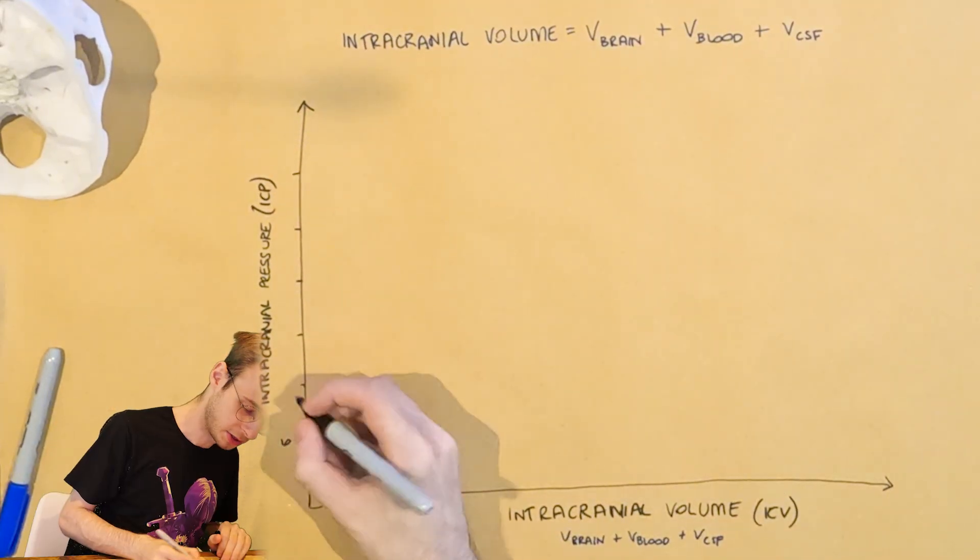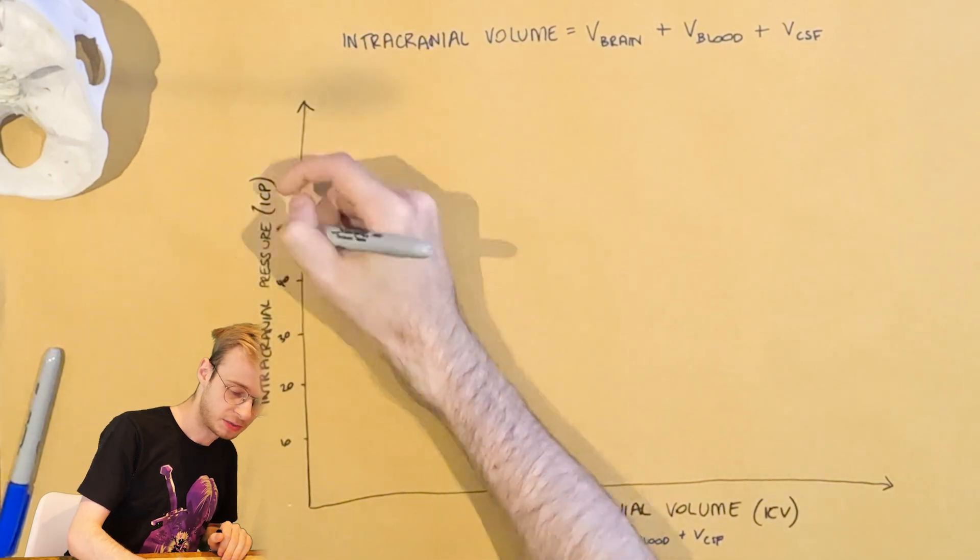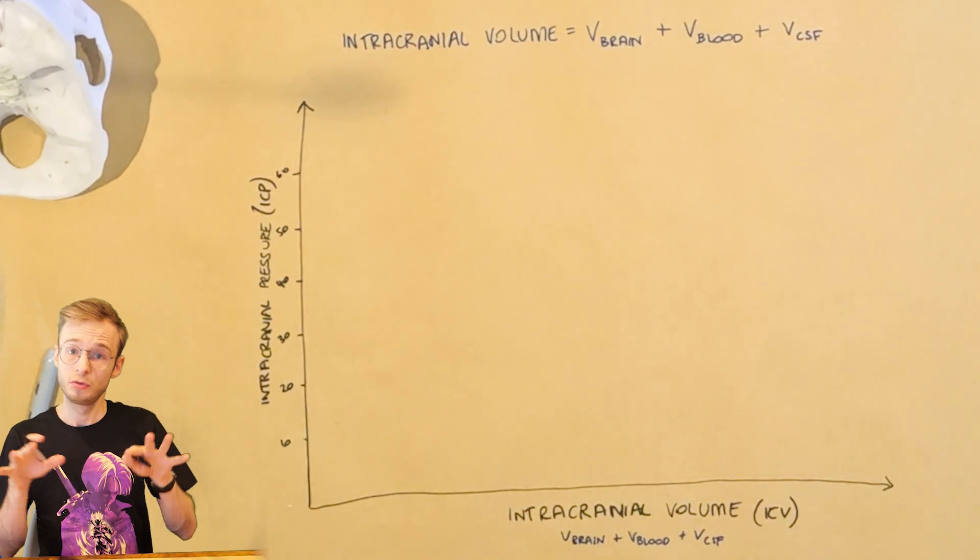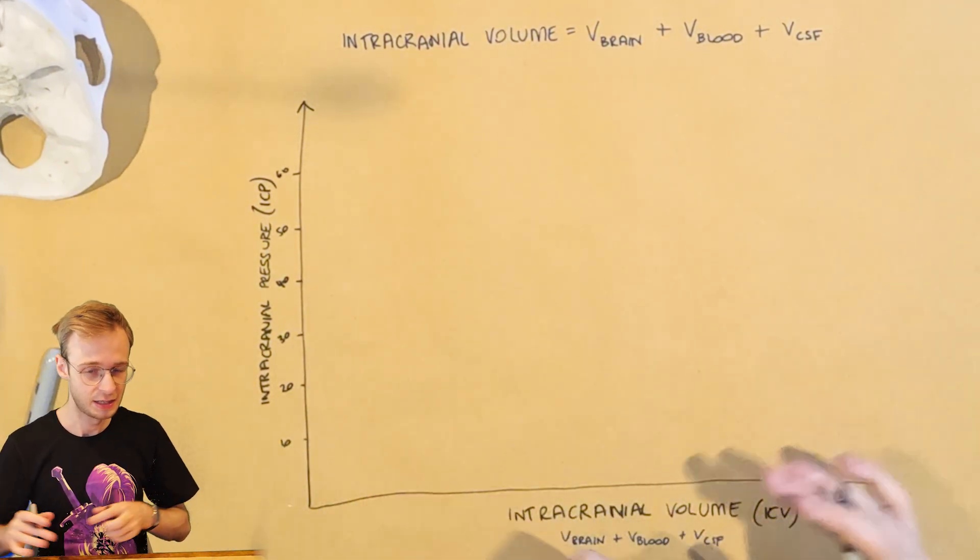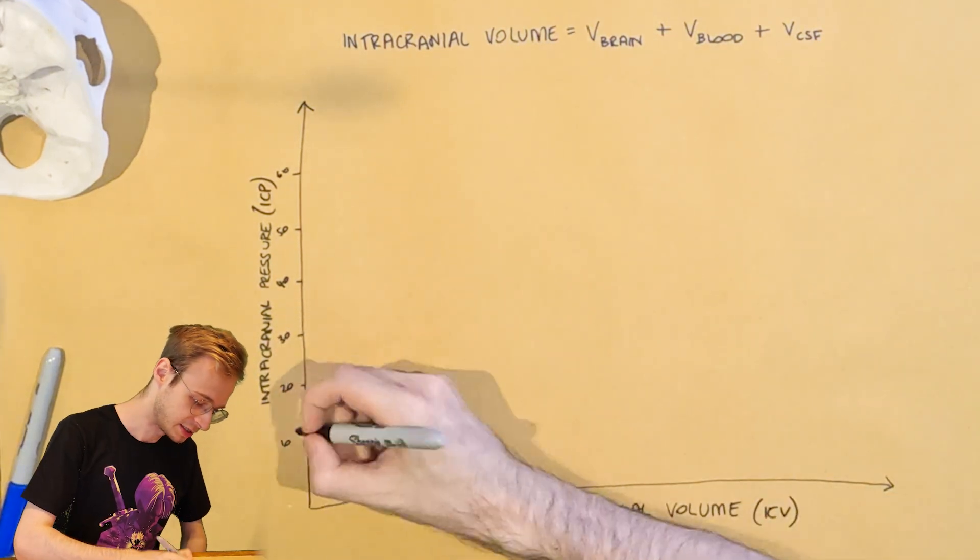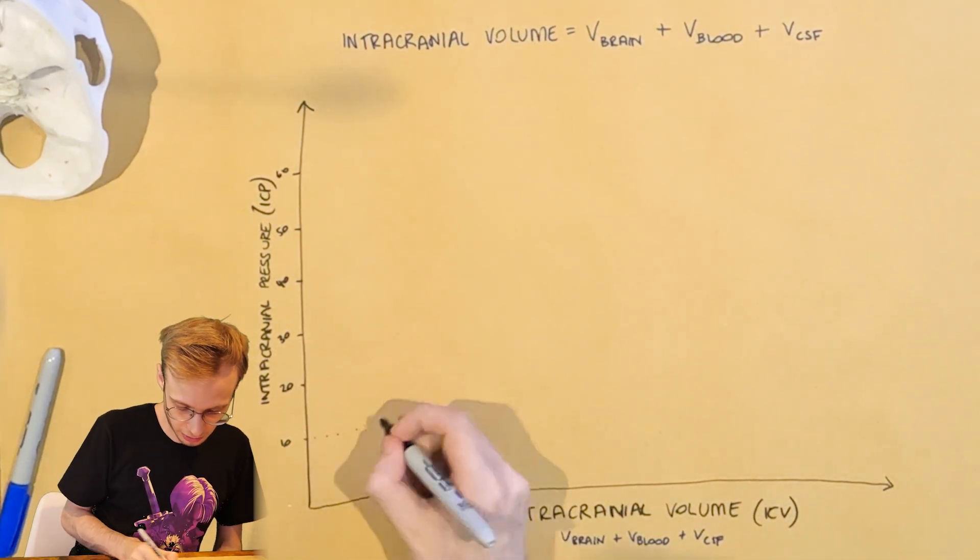Now we'll just give ourselves some reference points here, so going from 10 to 60. Now under normal circumstances, ICP sits somewhere in between 5 and 15 millimeters of mercury in a normal person, so we'll give ourselves 10 as a reference point on the graph.